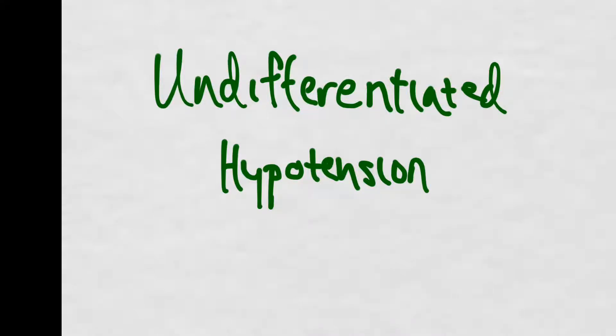Today we're going to talk about the undifferentiated hypotensive patient. There's nothing more terrifying than when your nurse tells you that your patient is suddenly hypotensive and has a blood pressure maybe in the 60s. When you get that call, every second matters, and it's important for you to have a good algorithmic approach so that you know exactly what you're going to do next for this patient.